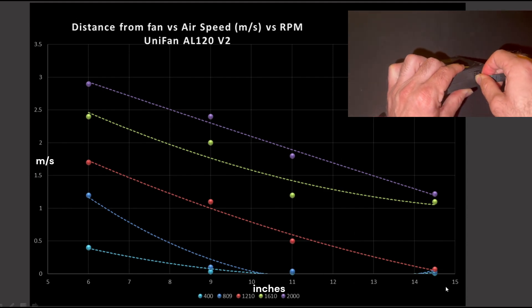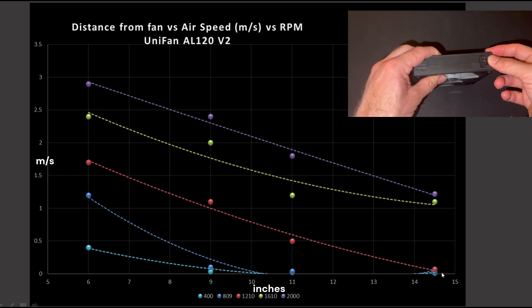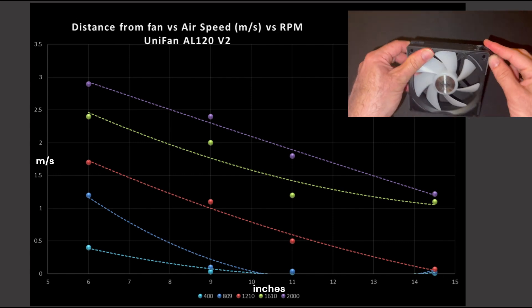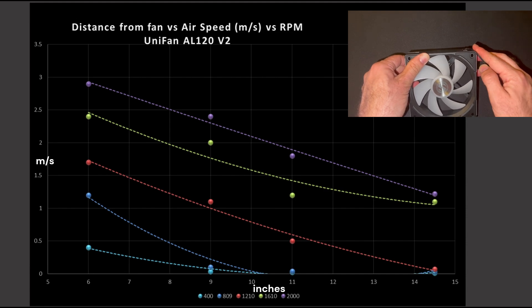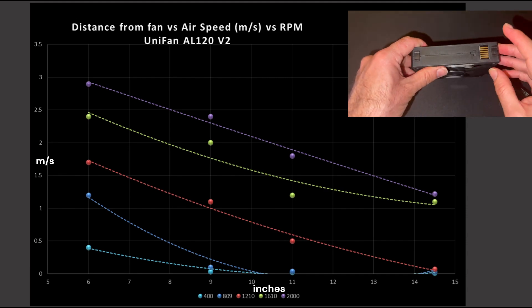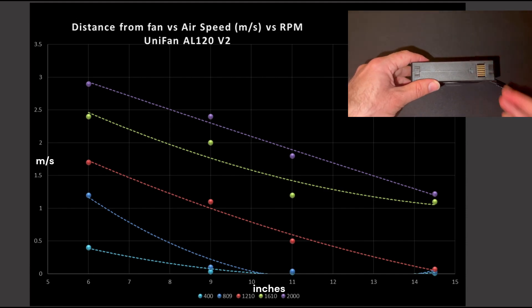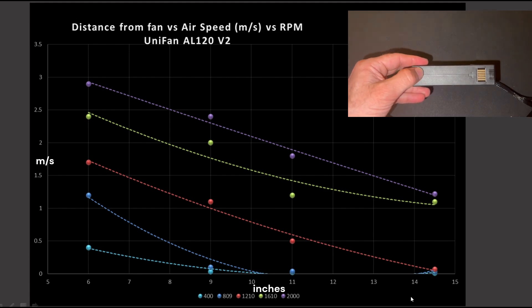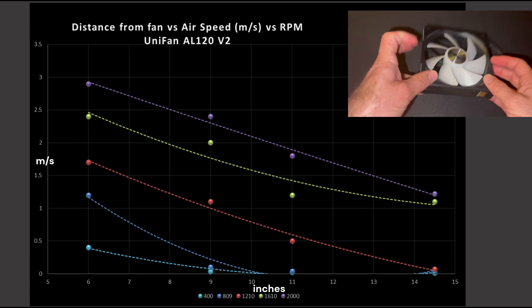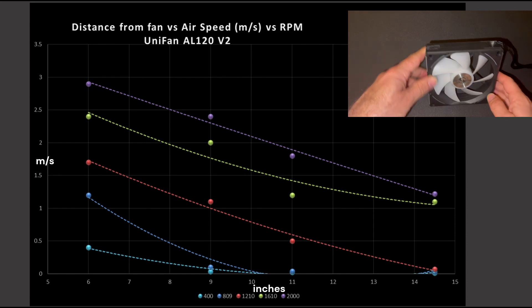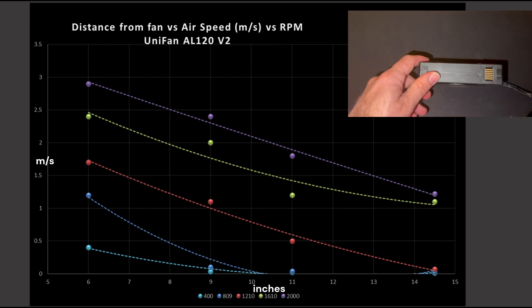And then we have the 14.5-inch mark. This is represented by your large towers. Something like the Fractal Torrent is that 14.5-inch mark. So this would be your very epic large towers. So this distance that we're measuring is the distance from the back of the case fans to the rough position of the CPU socket, so where your air cooler would be located.